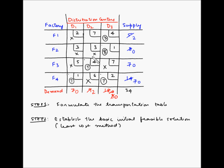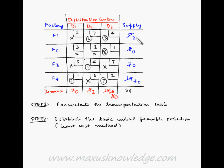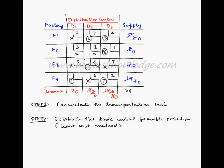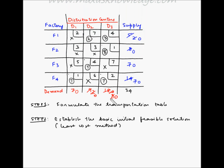Now only one box remains: F1D2. F1 has a remaining supply of 2 units and D2 has a remaining demand of 2 units, so we allocate 2 units here. With this allocation, both supply at F1 and demand at D2 become 0. All supply and demand conditions are now satisfied, giving us our basic initial feasible solution.